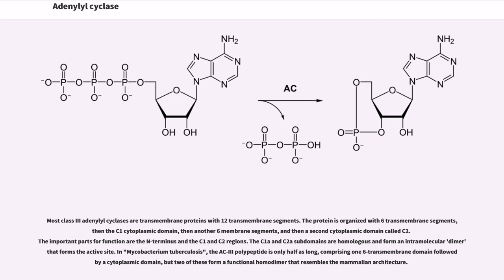Most class 3 adenylyl cyclases are transmembrane proteins with 12 transmembrane segments. The protein is organized with 6 transmembrane segments, then the C1 cytoplasmic domain, then another 6 membrane segments, and then a second cytoplasmic domain called C2. The important parts for function are the N-terminus and the C1 and C2 regions. The C1a and C2a subdomains are homologous and form an intermolecular dimer that forms the active site.